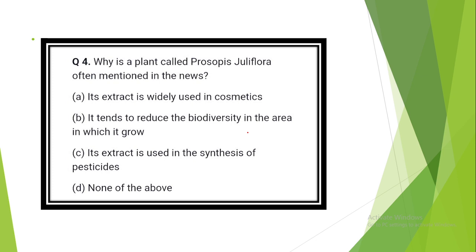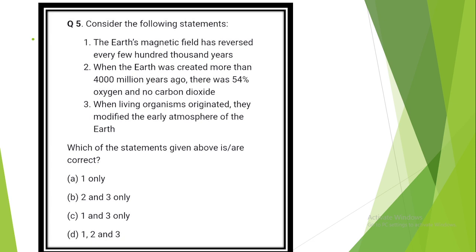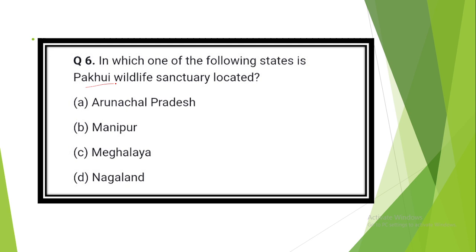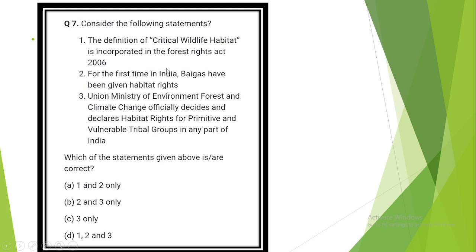2018 UPSC prelims questions related with environment. Question number 1. Consider the following. The answer is option B: Pollution of groundwater, lowering of water table. Question number 3. The Partnership for Action on Green Economy is a United Nations mechanism to assist countries transition towards greener and more inclusive economies emerged at Option B: United Nations Conference on Sustainable Development 2012, Rio de Janeiro. Question number 4. Why is a plant called Prosopis juliflora often mentioned in the news? The answer is option B: It tends to reduce the biodiversity in the area in which it grows. Question number 5. Consider the following statements. The answer is option C: 1 and 3. The earth's magnetic field has reversed every few hundred thousand years. When living organisms originated, they modified the early atmosphere of the earth.